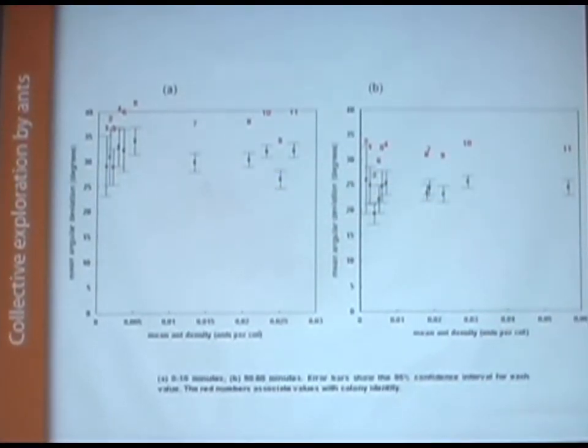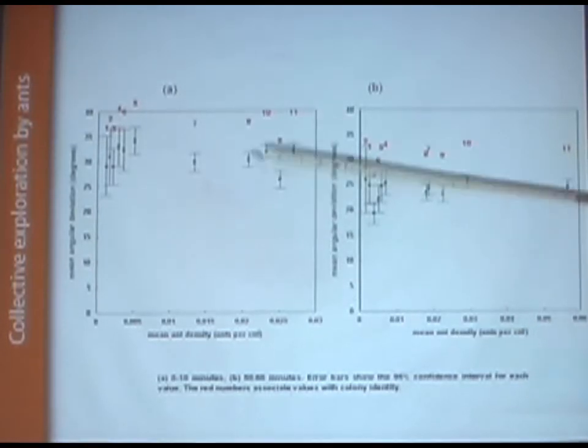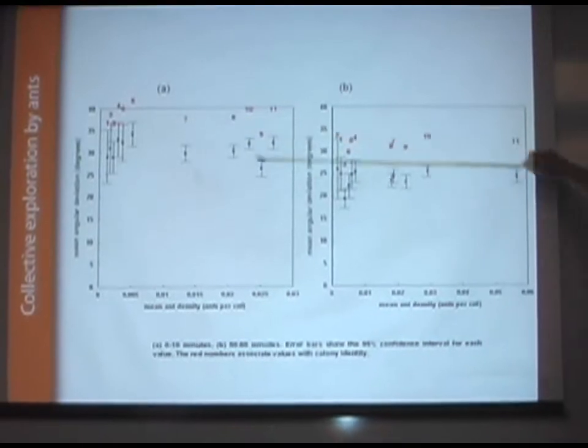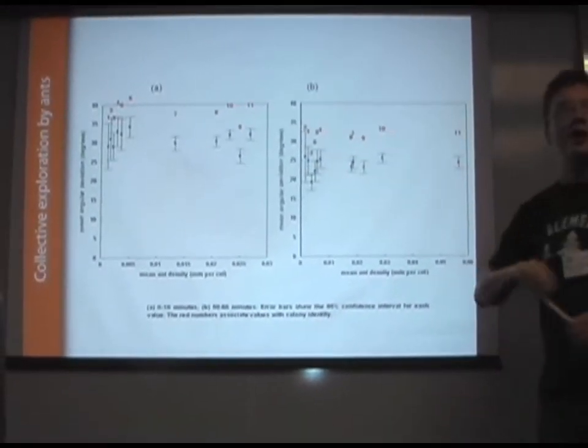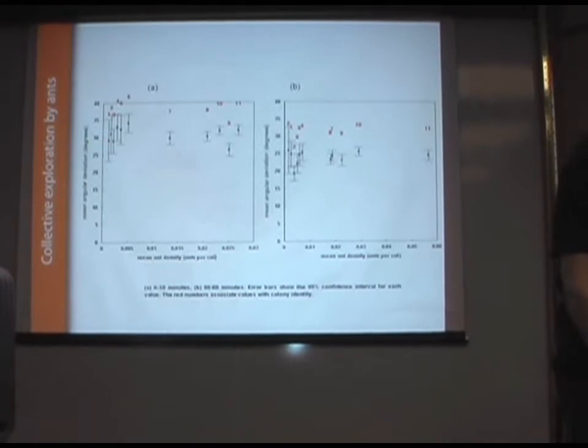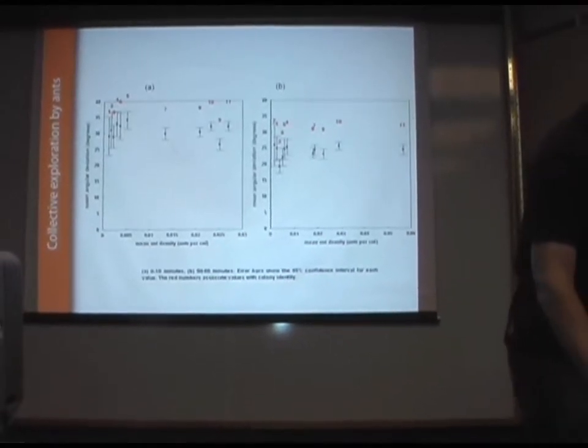So the ants aren't doing anything clever in respect to how they're manipulating their tortuosity. They basically have a simple algorithm which does change over time. You can see this at the start of the experiment and towards the end. They create a more linear trajectory over time, but it doesn't really matter at what density they are. They just have a standard routine for doing that.